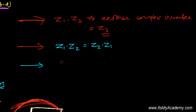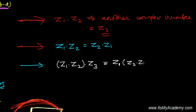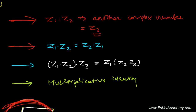Third, the product of two or more complex numbers follows the associative law. This means if you have three complex numbers Z1, Z2, and Z3, then (Z1 times Z2) times Z3 equals Z1 times (Z2 times Z3).